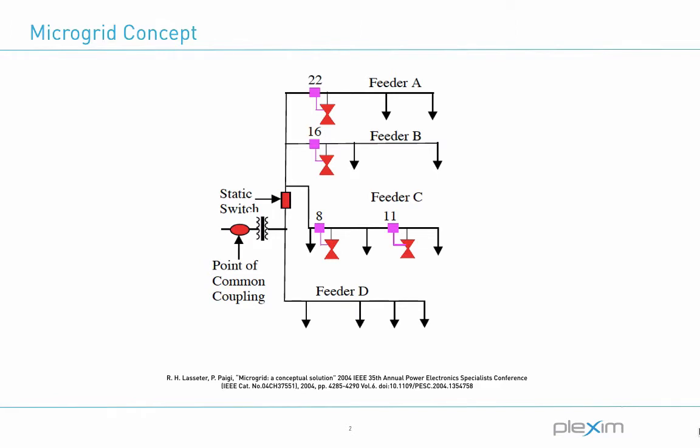What is a microgrid? A microgrid is a system approach to view generation and associated loads as a subsystem. The figure here shows an example of a microgrid with a group of radial feeders and four micro sources at nodes 8, 11, 16, and 22.